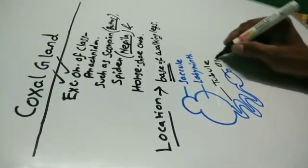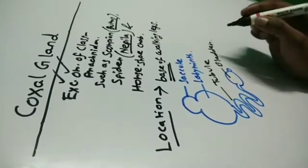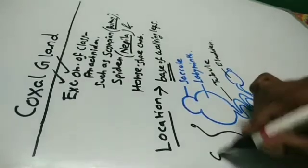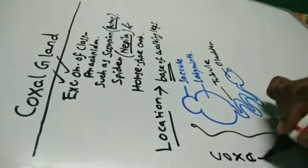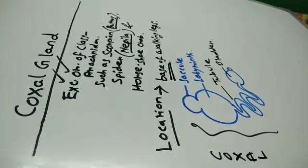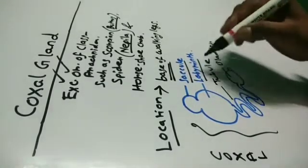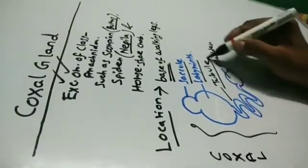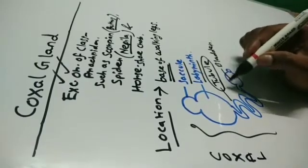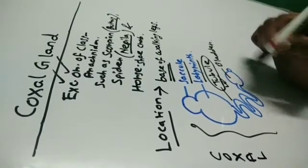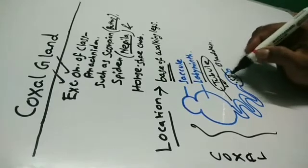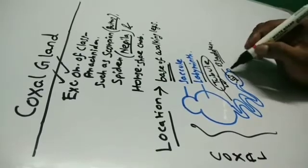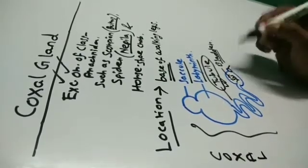That is the overall structure of the coxal gland. In saculi and labyrinth, the initial urine is formed. Then in the tubule, the reabsorption and secretion of the molecules occur, and ultimately the urine is stored in this bladder and then finally excreted through the excretory pore.